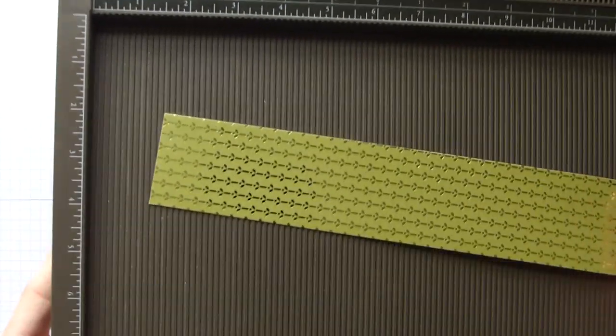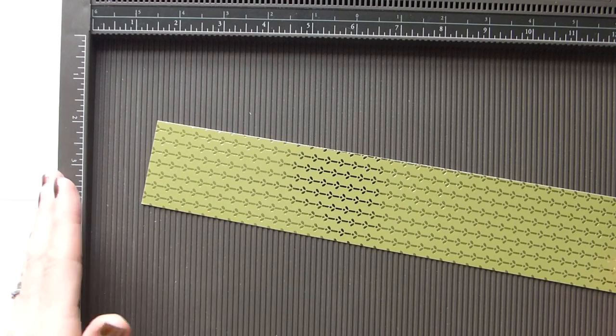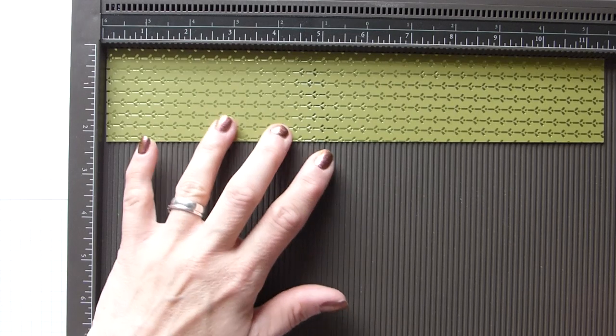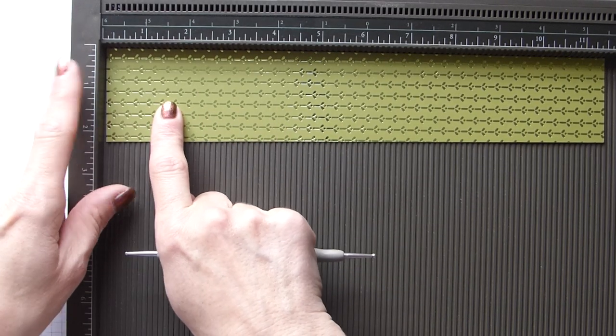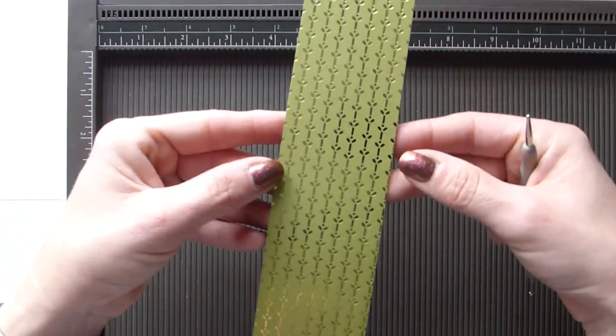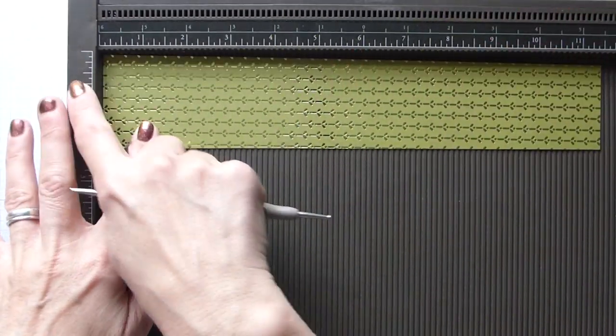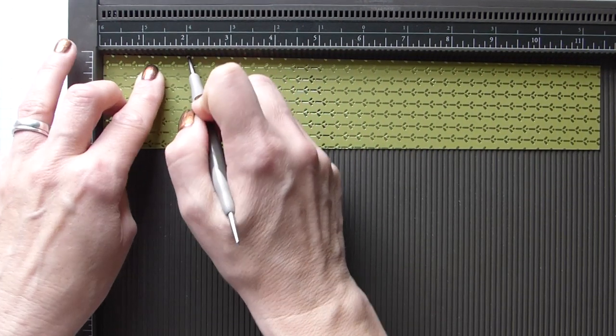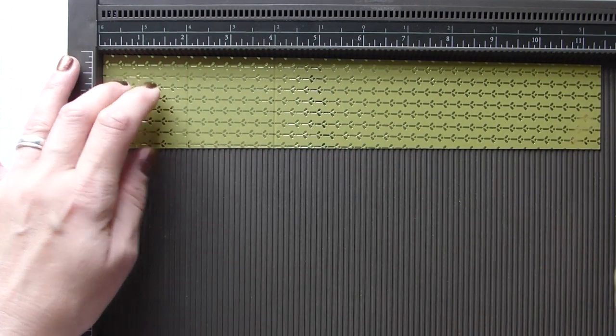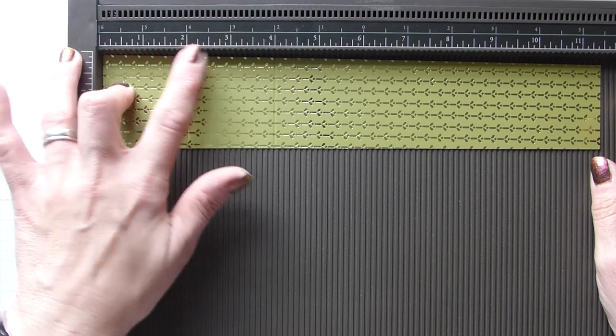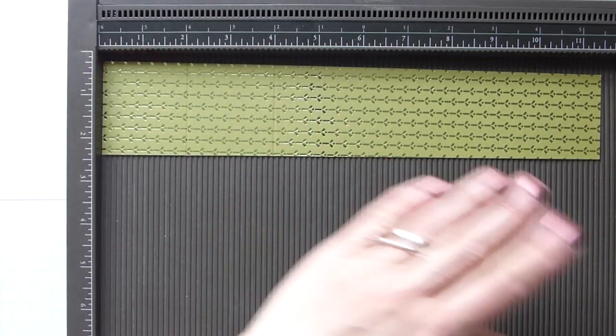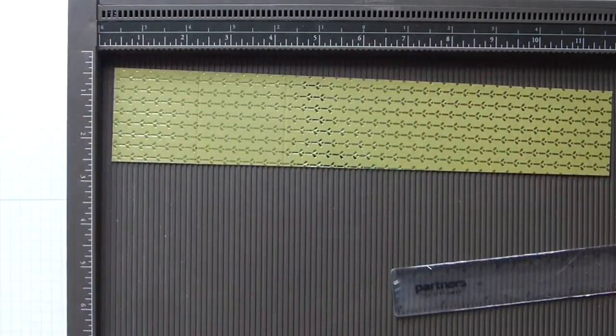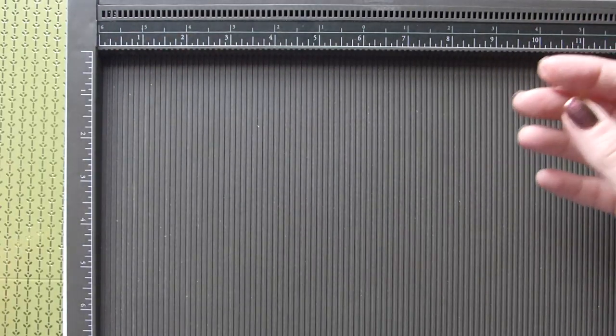On the long side, we are simply going to score. Now if you have a pattern, you want your pattern running from left to right. So that's the way up I want my box. I'm simply going to score at 2 and 4 inches, and that's it. That will be 5 and 10 centimeters. Let me double check. Yes, 5 and 10 centimeters. Then you're just going to pop that off to one side.